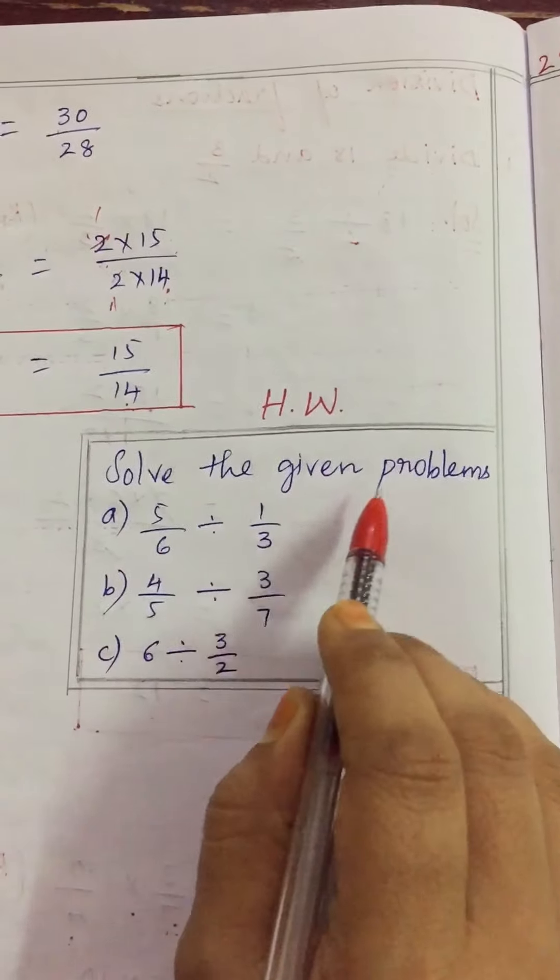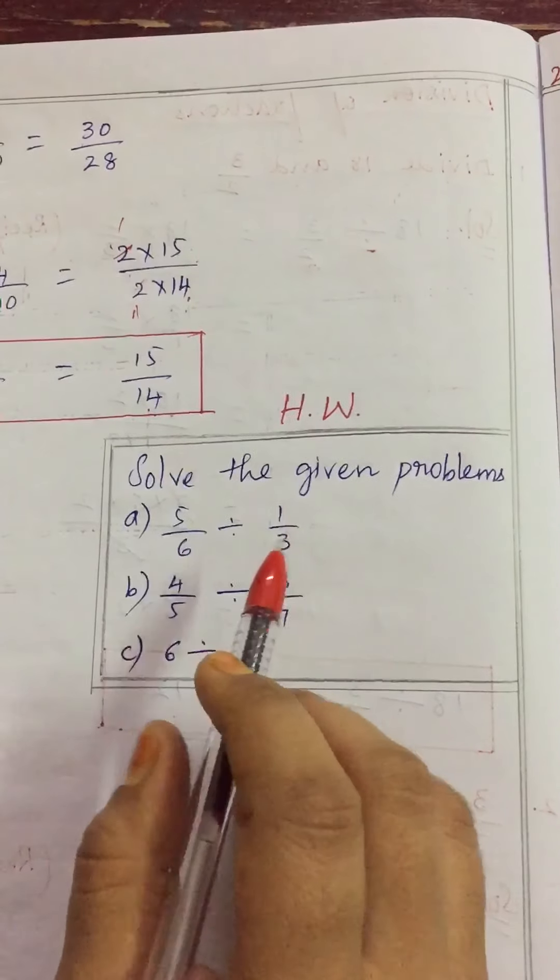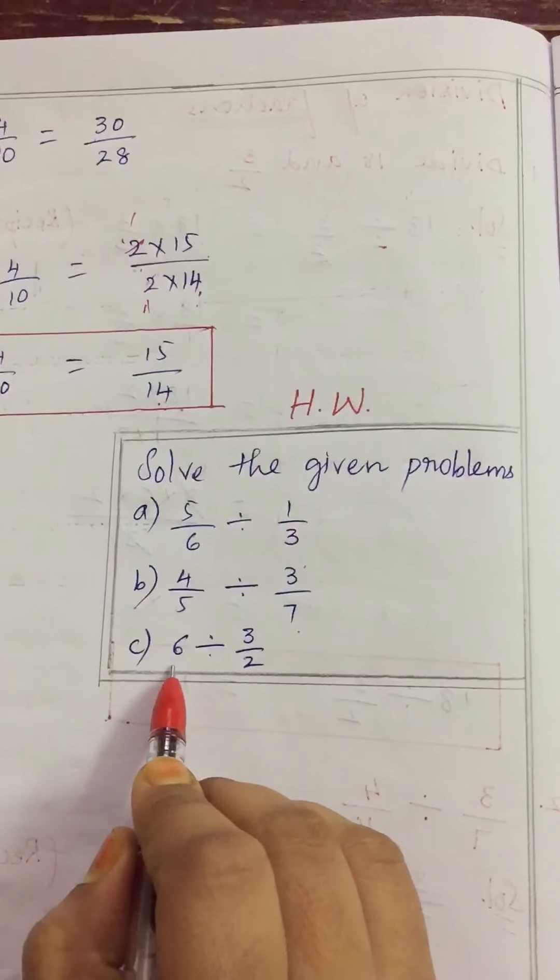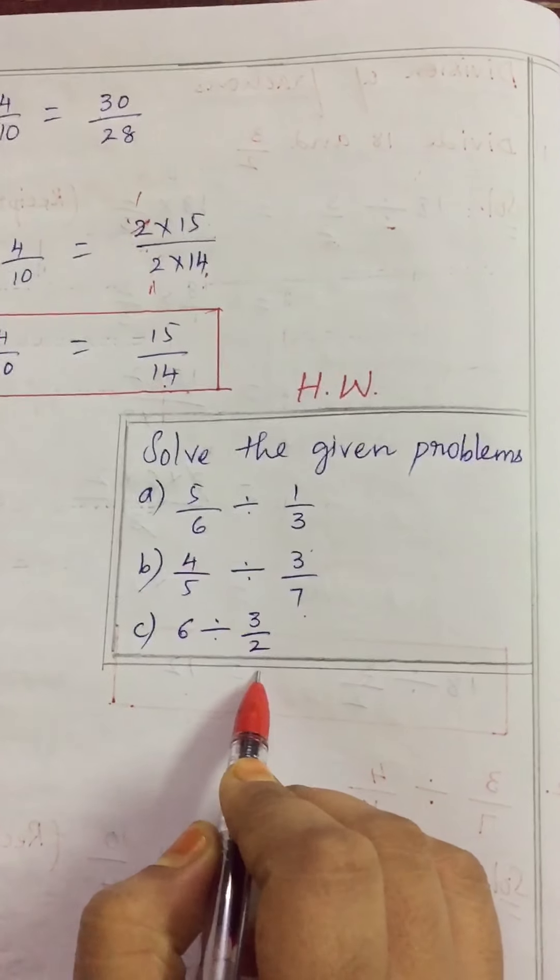Now, you take today's homework solve the given problems. You need to divide it 5 by 6 and 1 by 3, 4 by 5 and 3 by 7, and 6 with 3 by 2. Okay children?